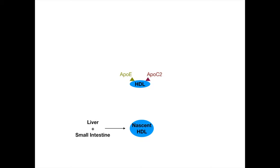There is a very high-yield enzyme that activates or converts nascent HDL into mature HDL. That enzyme is called lecithin cholesterol acyltransferase, also known as LCAT — L-C-A-T. The final apolipoprotein we need to discuss is APO-A1. APO-A1 is so high yield because it is the apolipoprotein that activates LCAT. So APO-A1 activates lecithin cholesterol acyltransferase, which means APO-A1 mediates the conversion of immature nascent HDL into mature HDL.